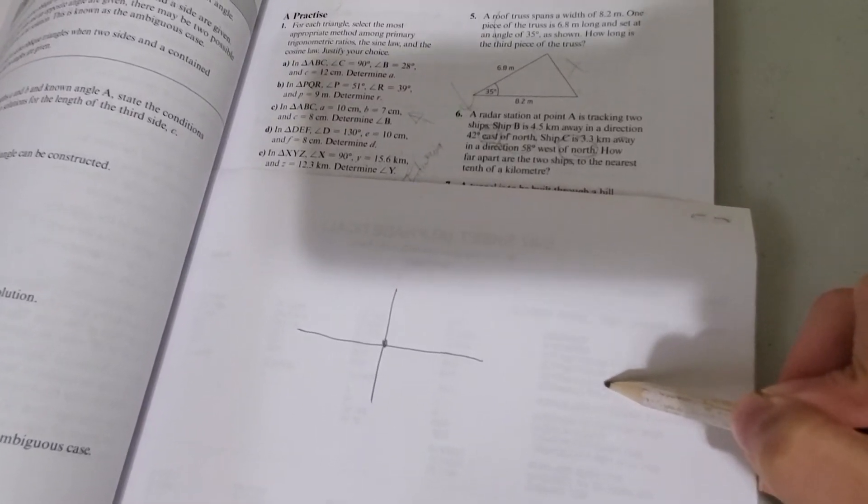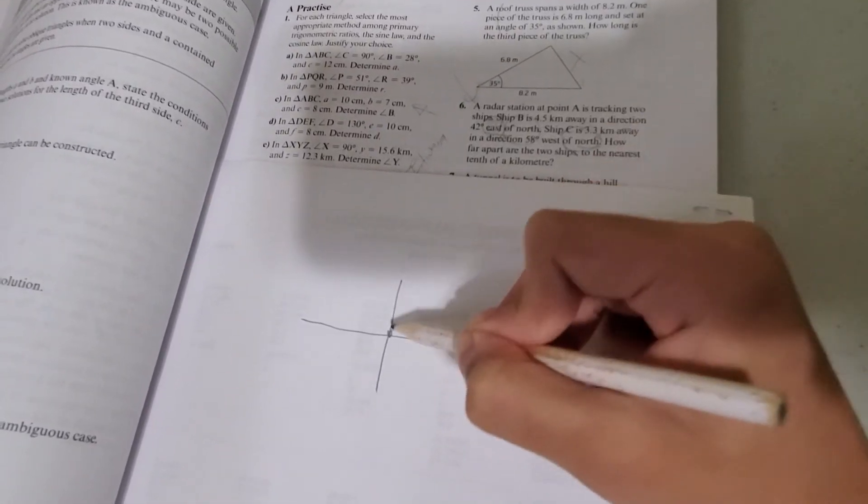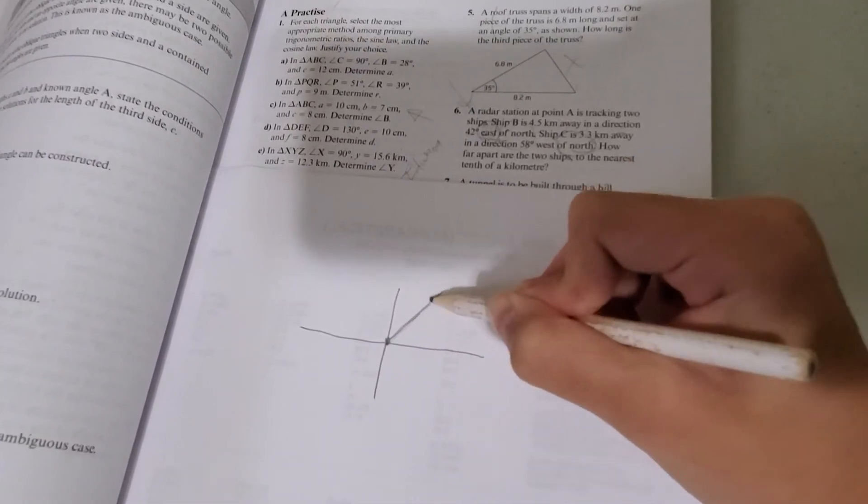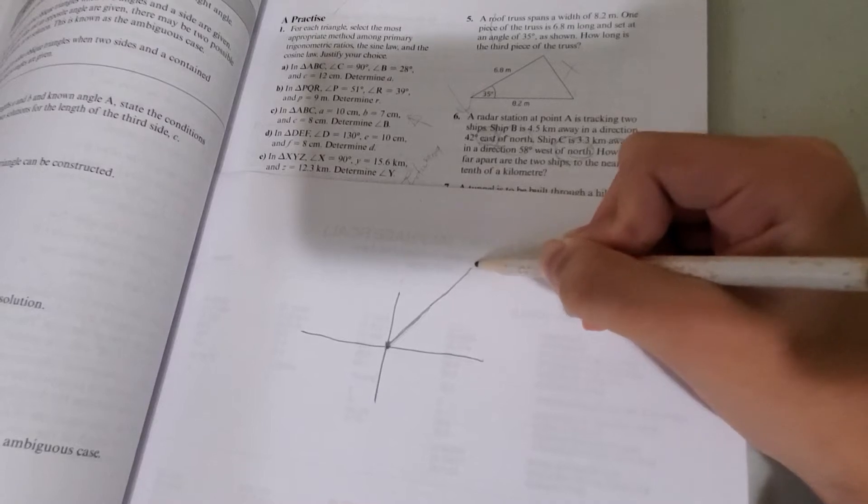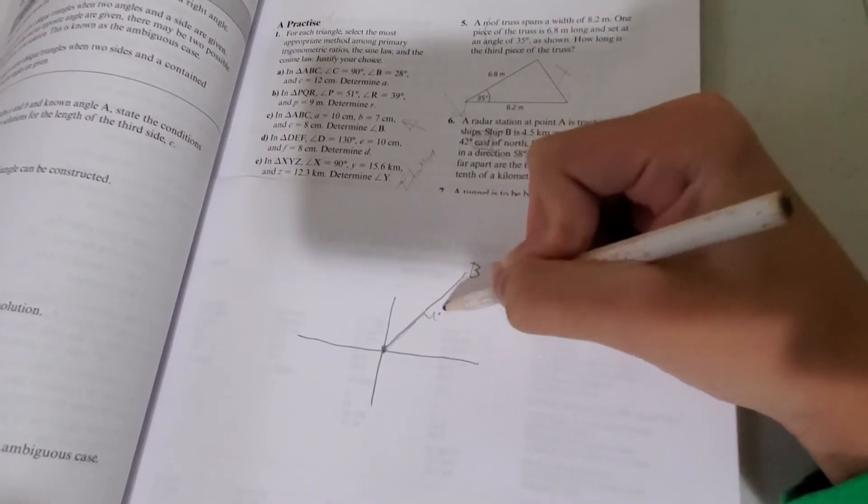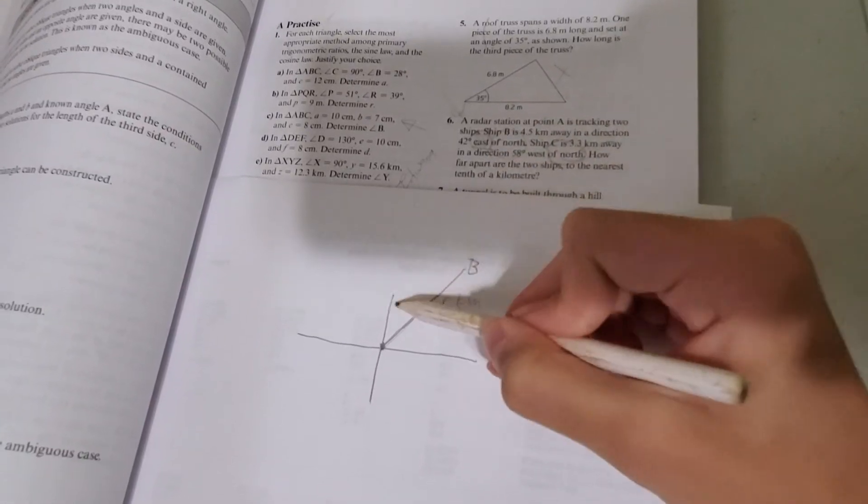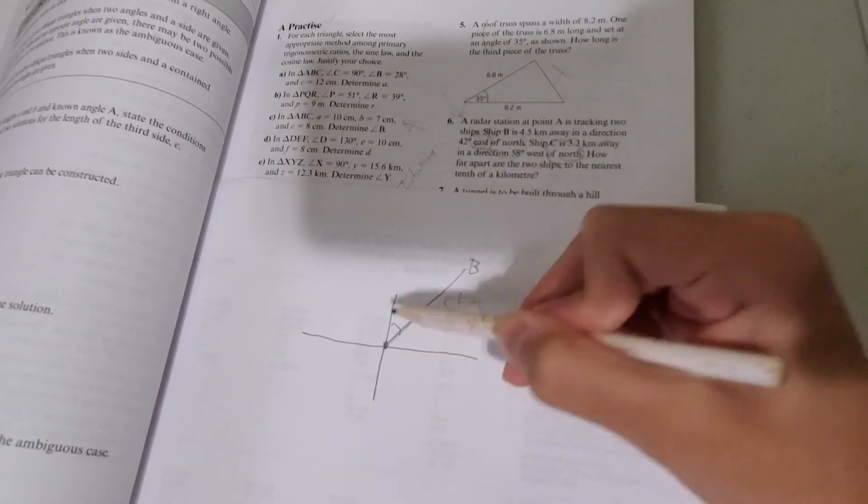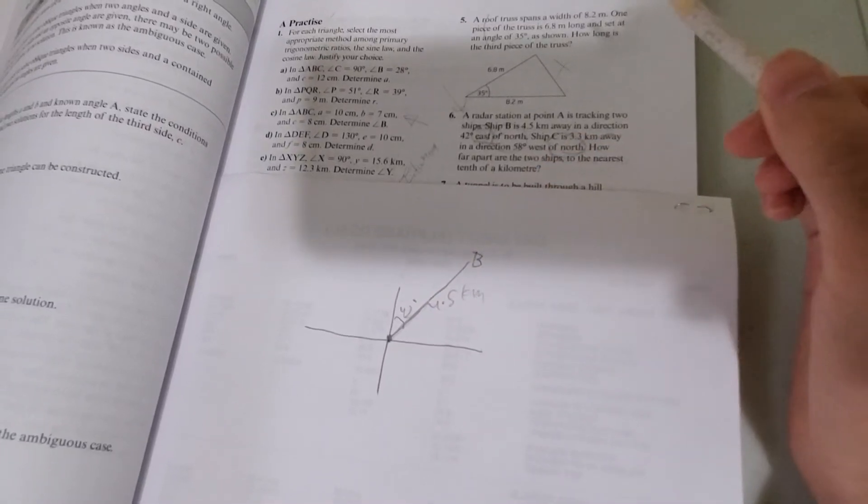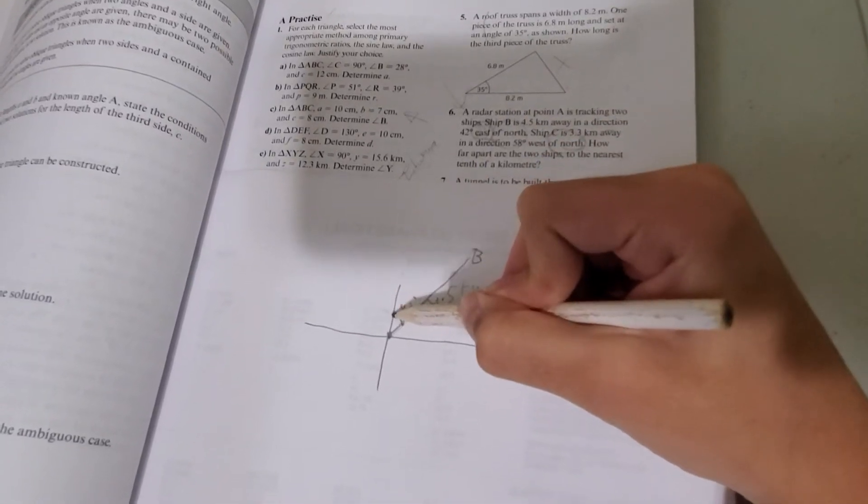42 degrees east of north. So this means that ship B is right here. This is B. This is 4.5 kilometers. And since it says east of north, 42 degrees. So that's what that means. So 42 degrees east of north. This is the angle.